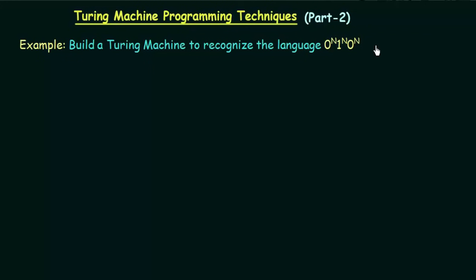We have been talking about Turing machine programming techniques and in this lecture we will be seeing another example where we will see how we can program our Turing machine in order to make it achieve a particular task or recognize a particular language. Here we have an example which says: build a Turing machine to recognize the language 0^n 1^n 0^n.